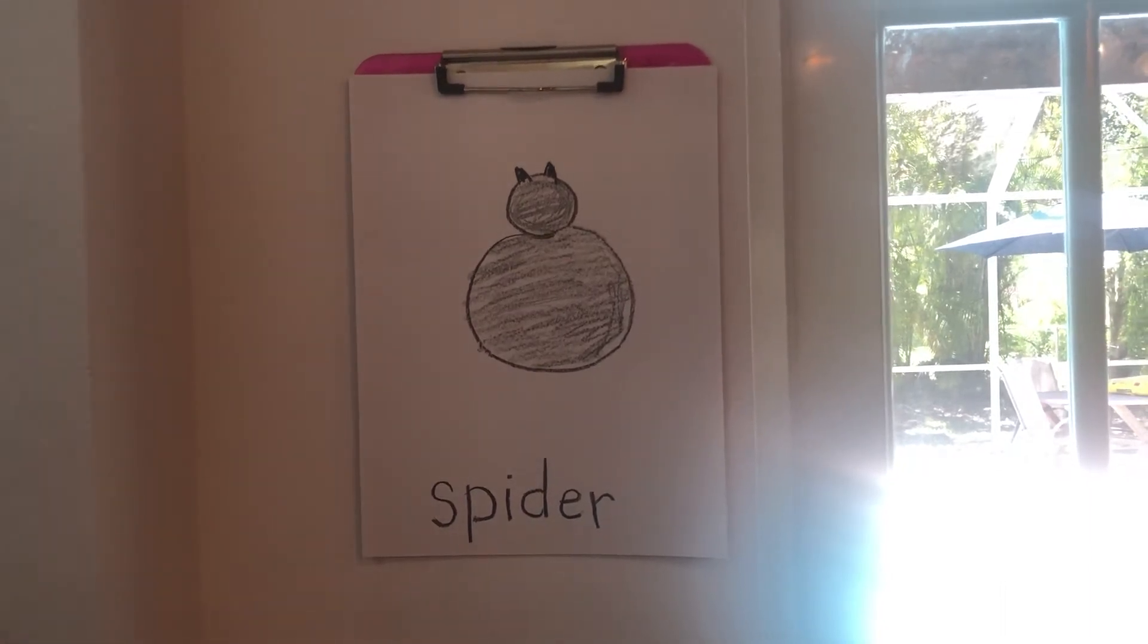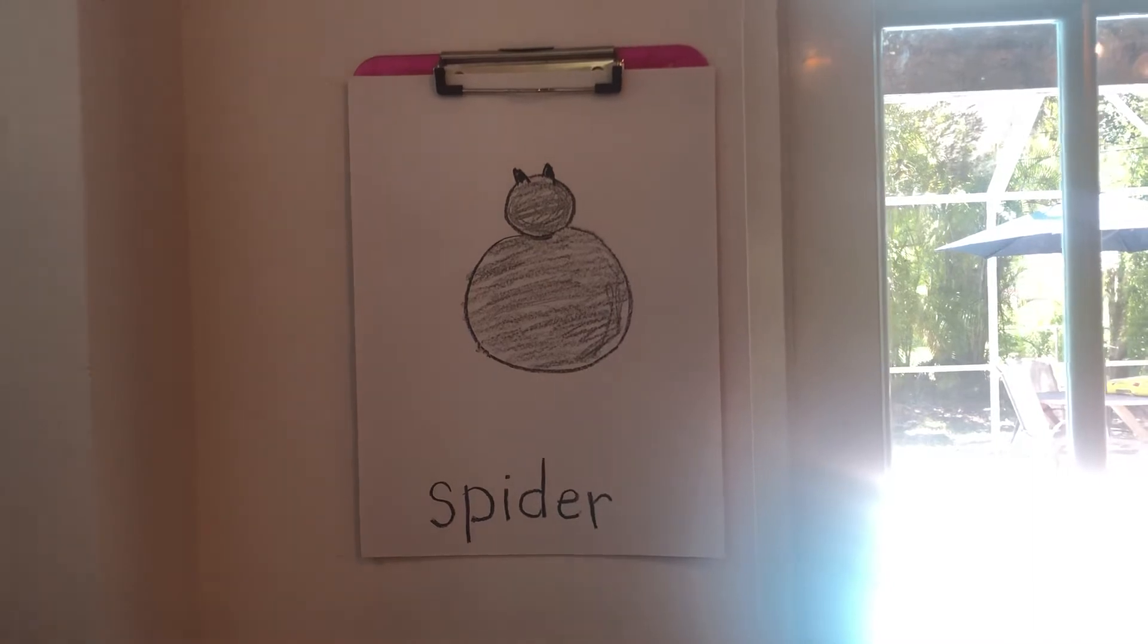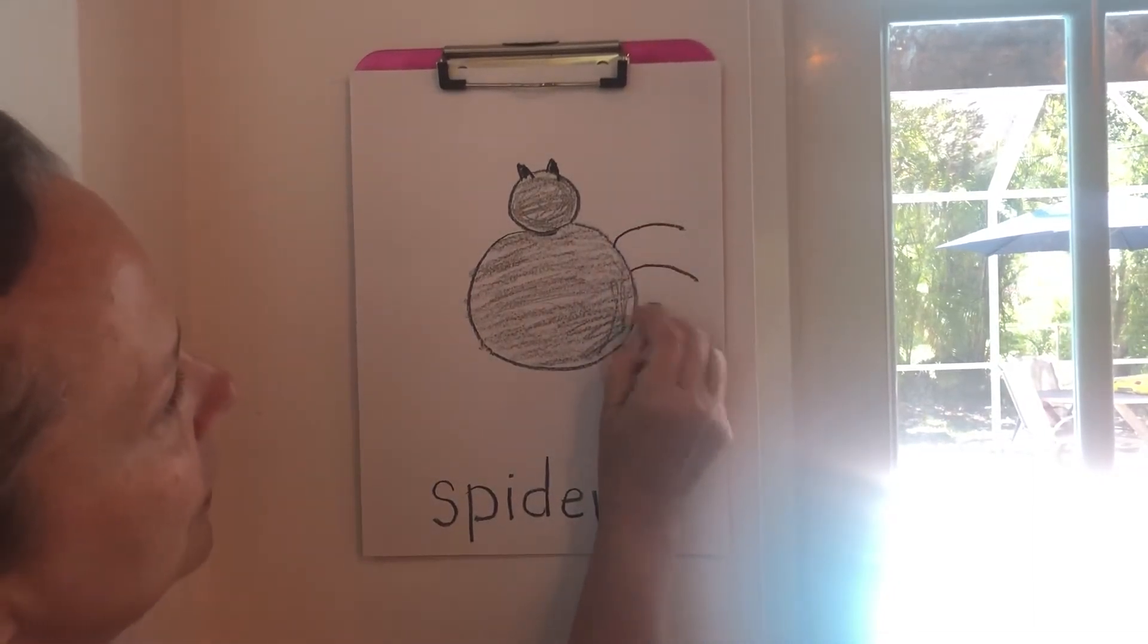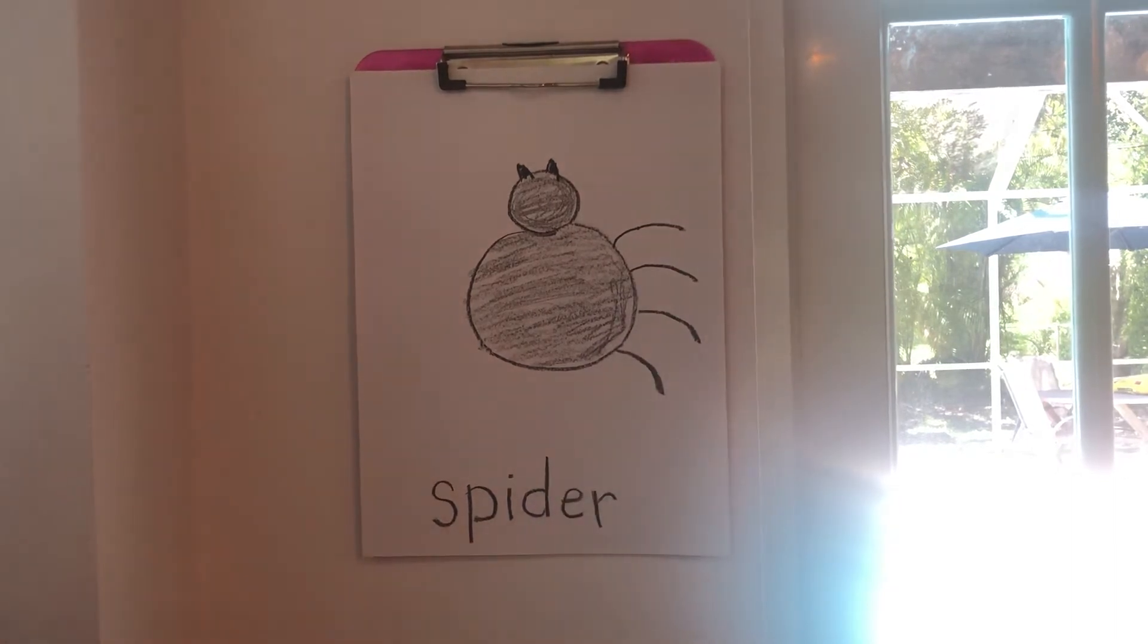How many legs does a spider have? They have eight legs. So we're gonna make one, two, three, four on one side, and one, two, three, four on the other side.